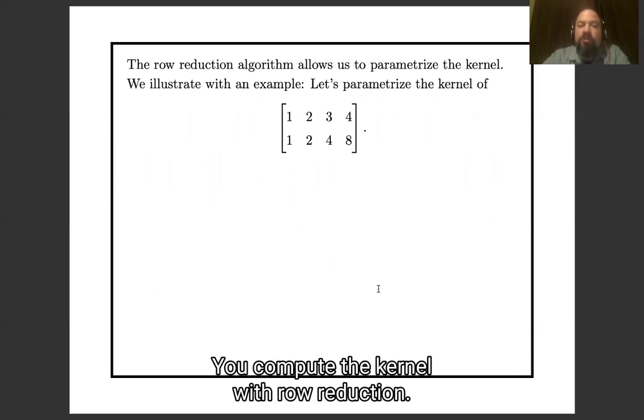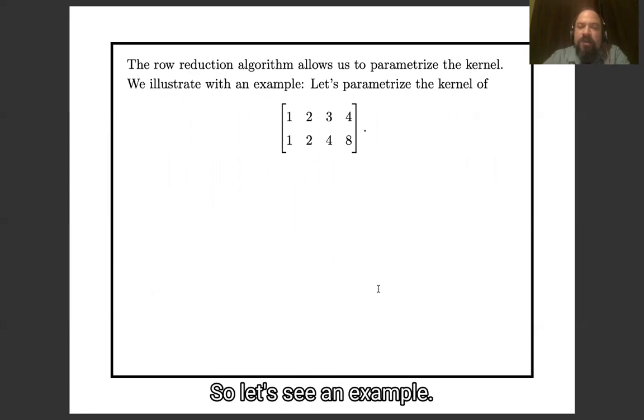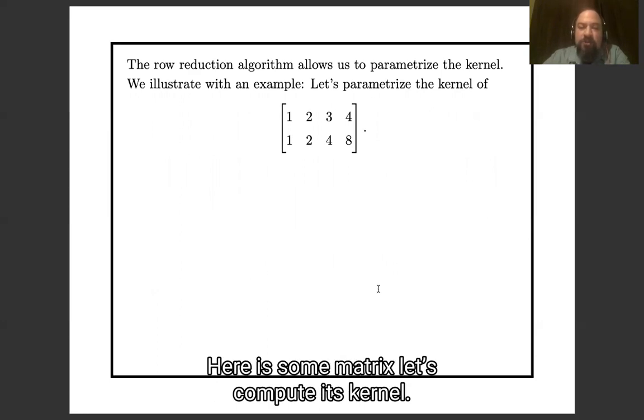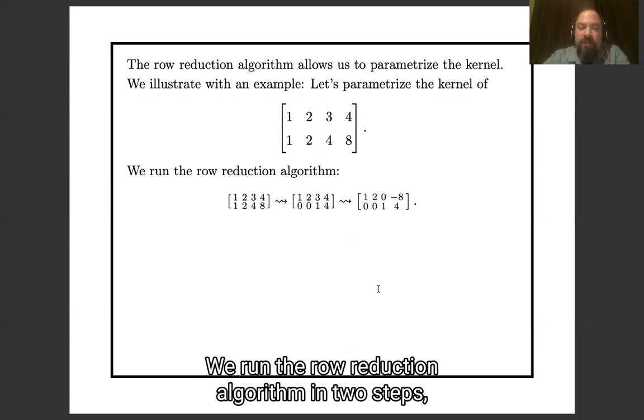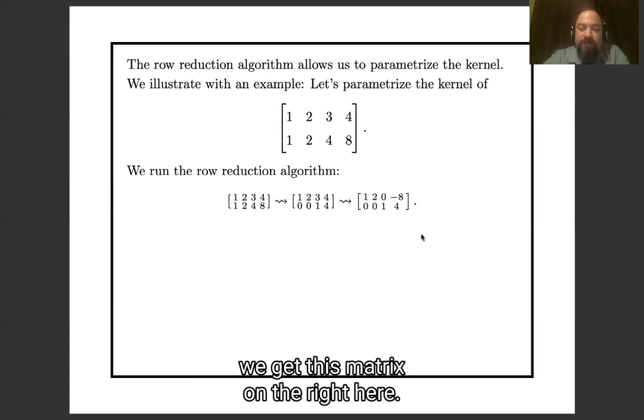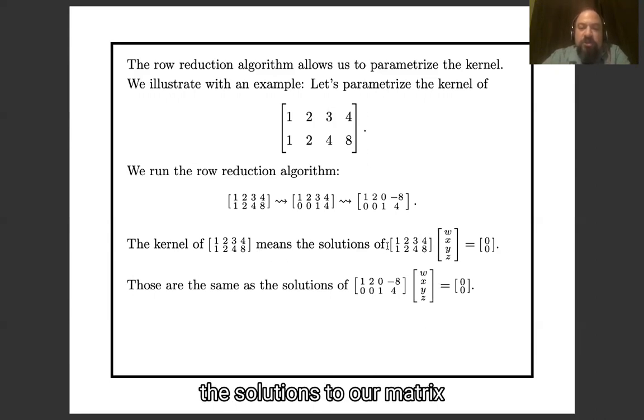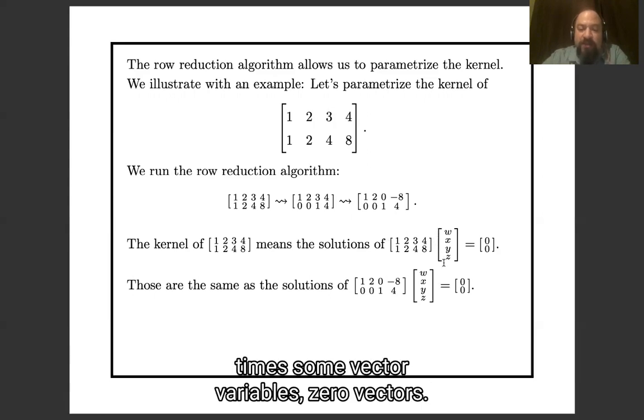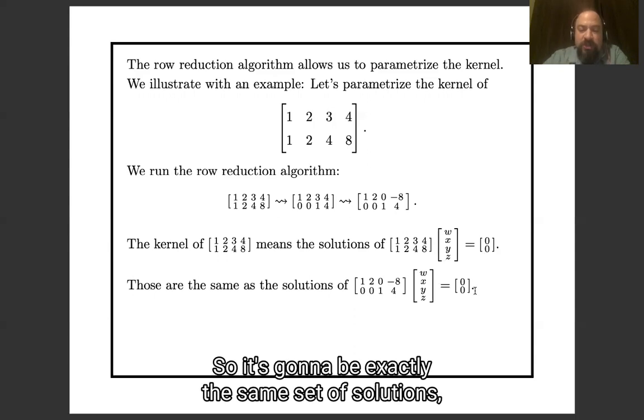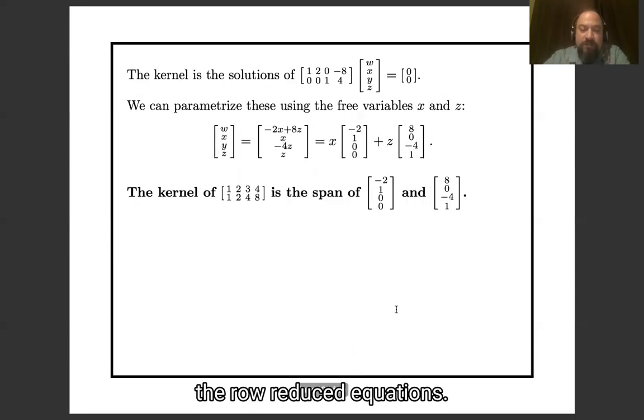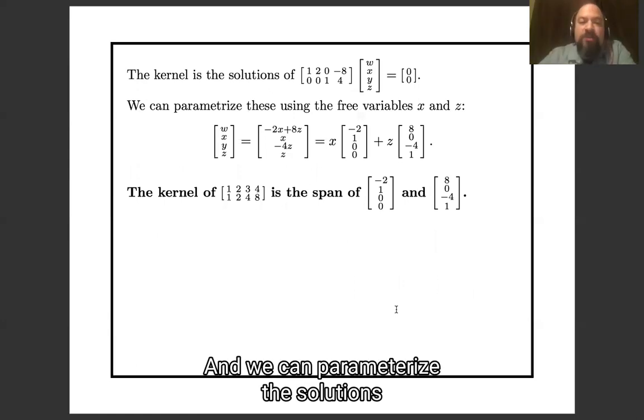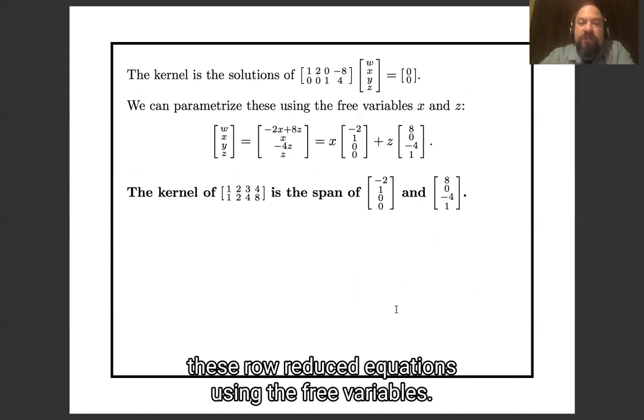How do you compute the kernel? You compute the kernel with row reduction. So let's see an example. Here is some matrix. Let's compute its kernel. We run the row reduction algorithm in two steps. We get this matrix on the right here. So the kernel, just the definition of kernel is it's the solutions to our matrix times a vector of variables as the zero vector. The point of row reduction is that it preserves the set of solutions to the equations. So it's going to be exactly the same as the set of solutions to the row reduced equations.